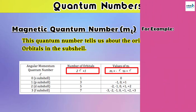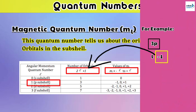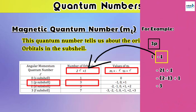For example, if we take the subshell 3p, the azimuthal quantum number will be 1. Applying this value to the formula 2l + 1 gives an answer of 3, which is the number of orbitals in the subshell. Using this formula, you can find the orbital count for all subshells.